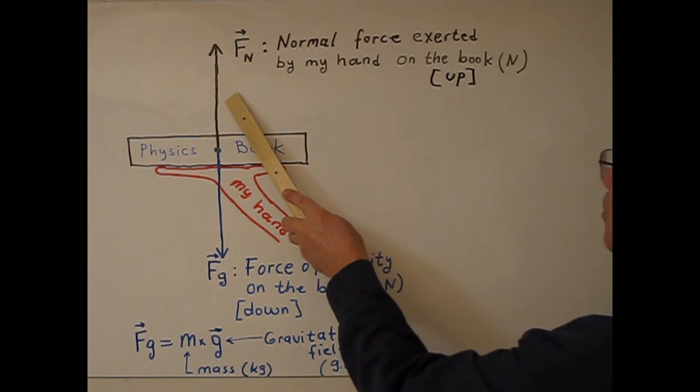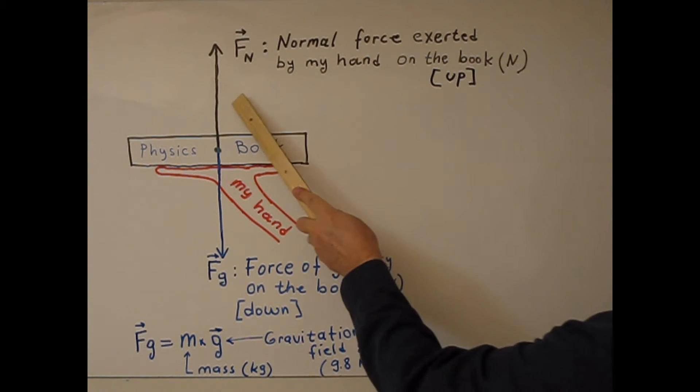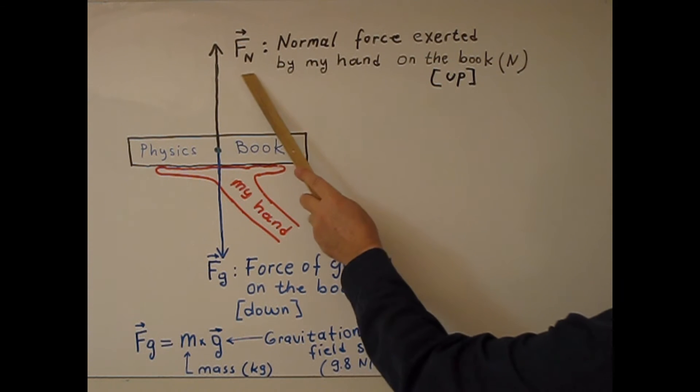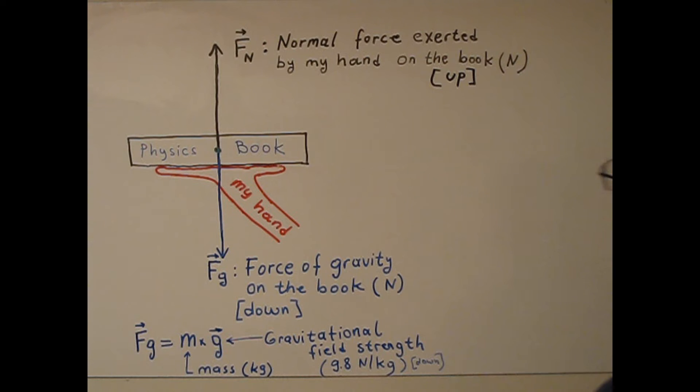This is the force applied by my hand, basically applied force. So this is equal to normal force, normal force exerted by my hand on the book.